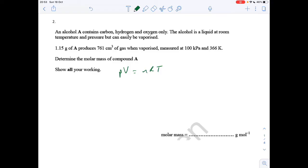So this rearranges to N equals PV over RT. Obviously we've got to know our units for the ideal gas. Pressure has got to be in pascals, so they've given us it in kilopascals, so that's 100,000 pascals times the volume.